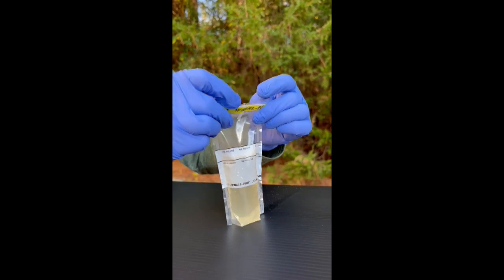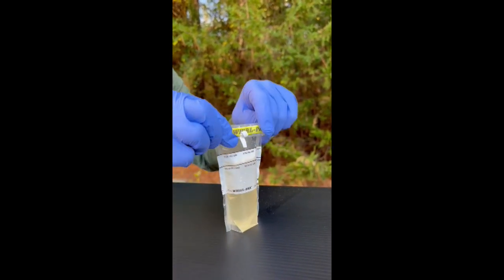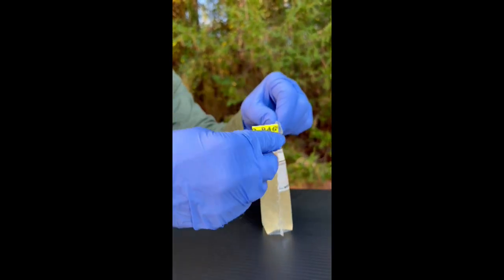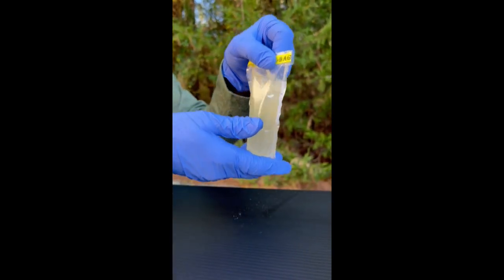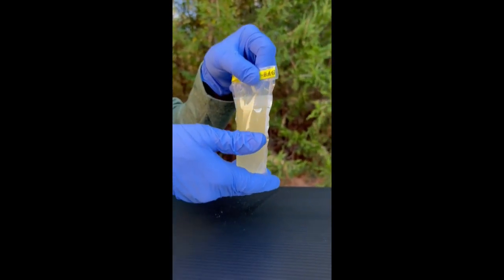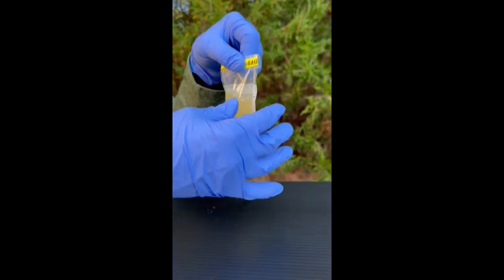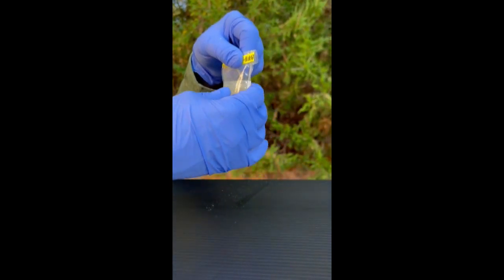Close the bag with the Whirlpack Seal. Dissolve the growth medium in the sample by gently swirling the bag and squeezing clumps of powder until the medium is dissolved.